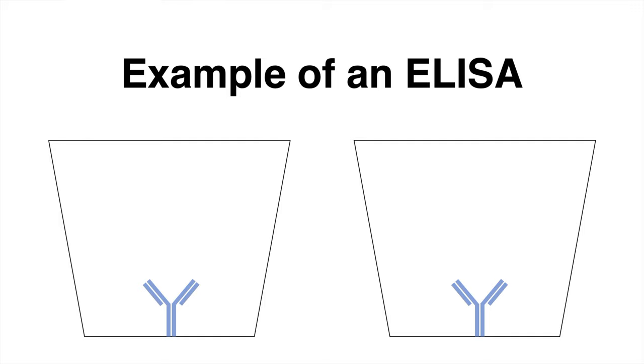Here, we provide an example of an ELISA. For this sandwich ELISA, we have two wells, both coated with primary antibody specific for protein X.